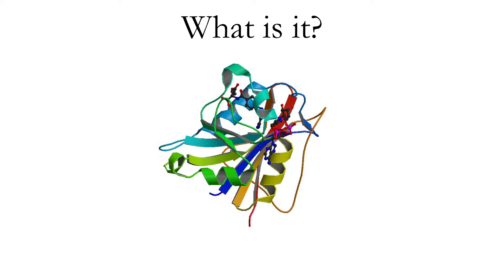This is dihydrofolate reductase, otherwise known as DHFR. DHFR is a small enzyme that's found in every cell which undergoes replication. In humans, it consists of 186 amino acid residues, has a molecular weight of only 20 kilodaltons, and contains eight beta strands and four alpha helices.